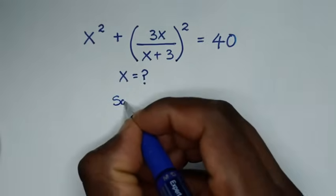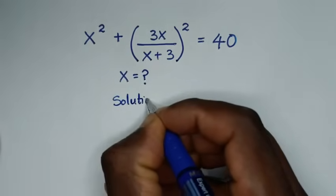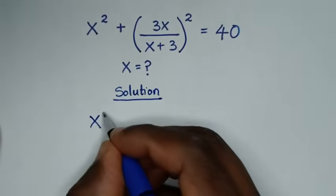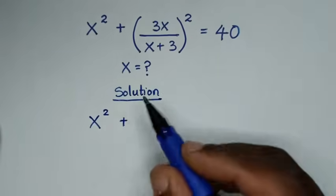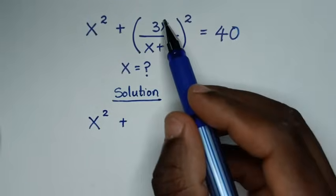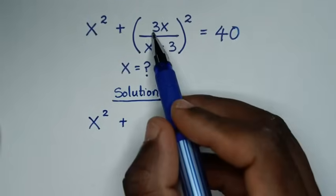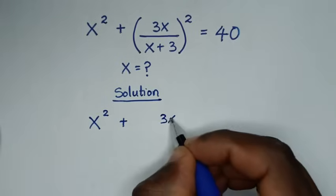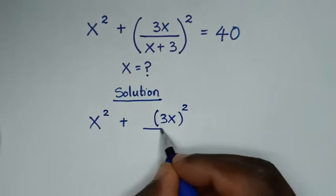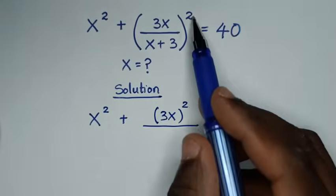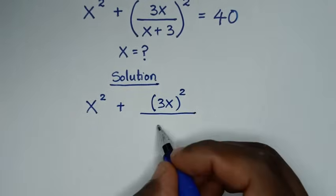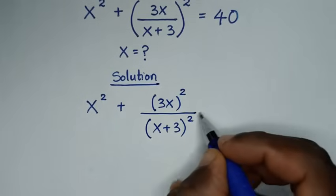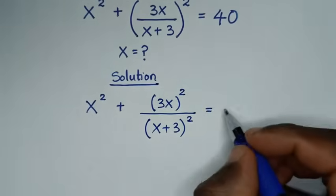Solution. From our problem, x squared plus 3x bracket squared — we'll take the square into the numerator and denominator — so it will be (3x)² in the numerator over (x + 3)² in the denominator, and that is equal to 40.